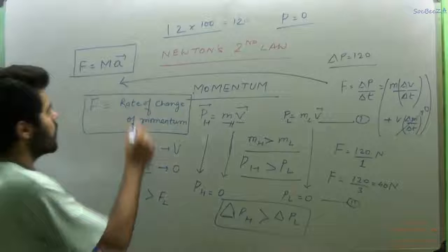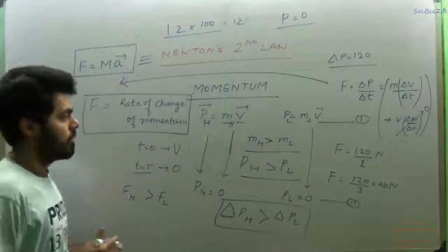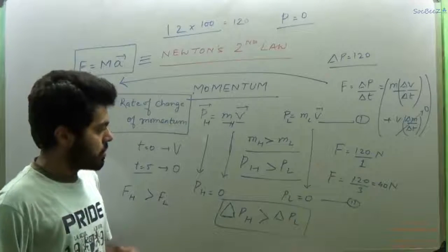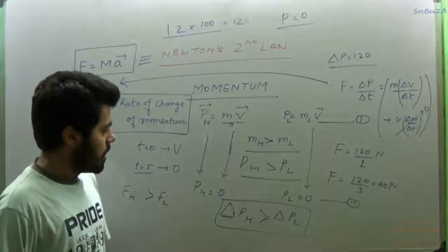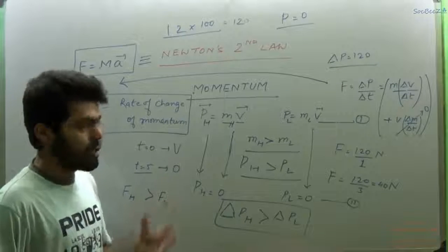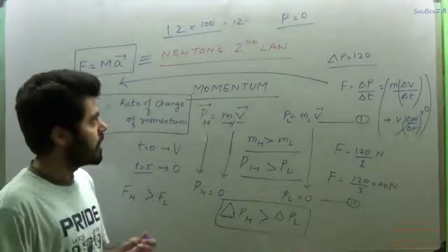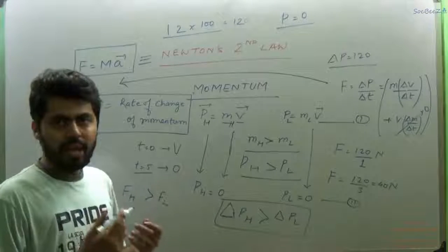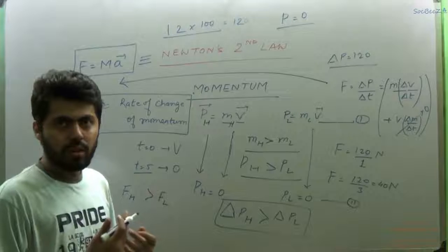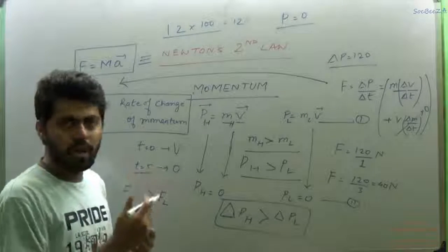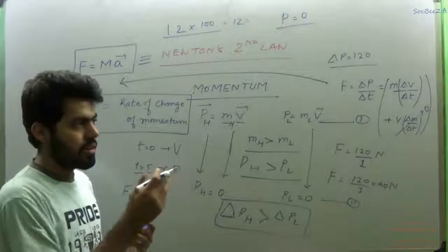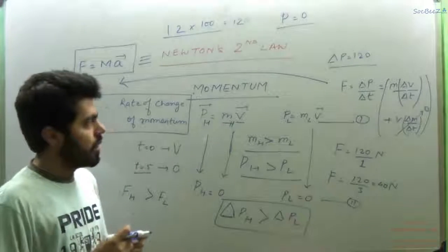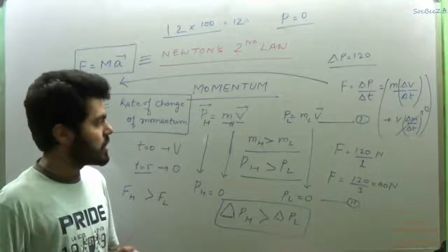So this is Newton's Second Law, which is another way of expressing Newton's First Law also, and also Newton's Third Law. Newton's Third Law is the simplest among them all: every action has equal and opposite reaction. If you apply a force on a body or an object, then that object will also apply the same amount of force back on you, but its direction will be opposite.